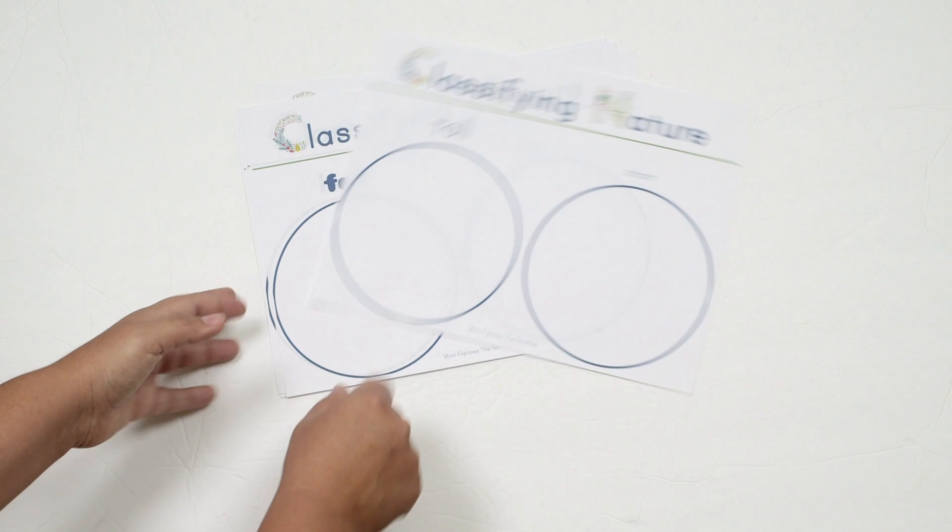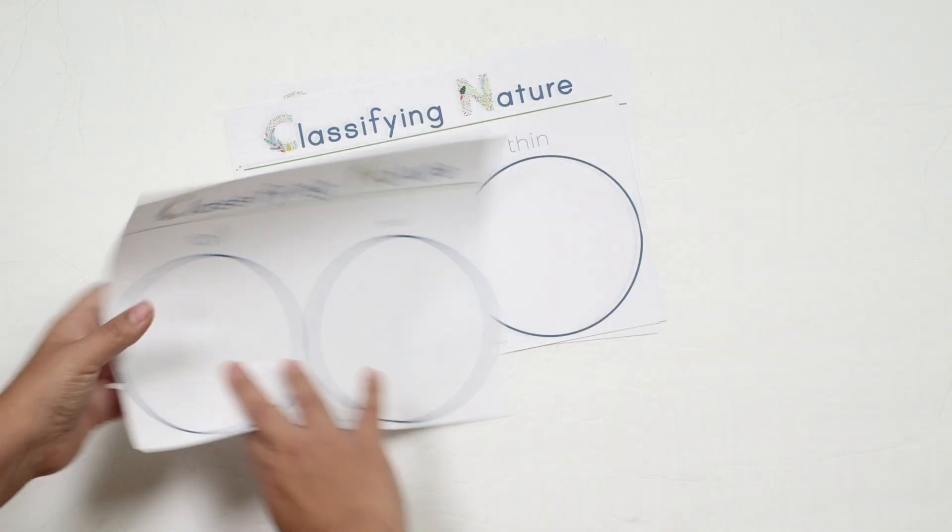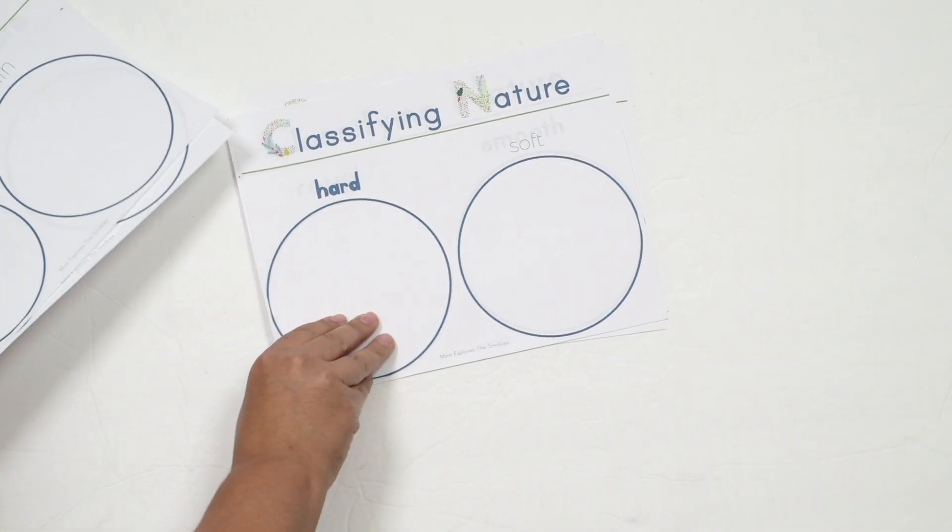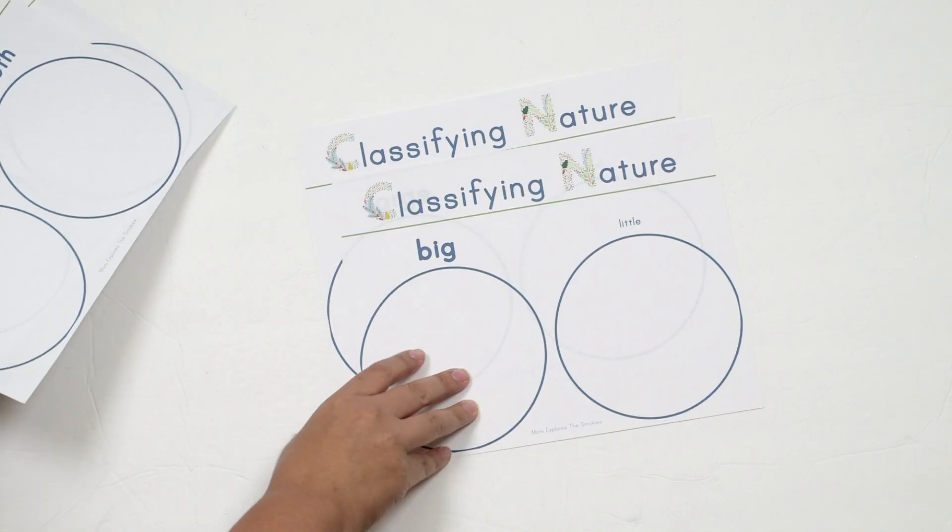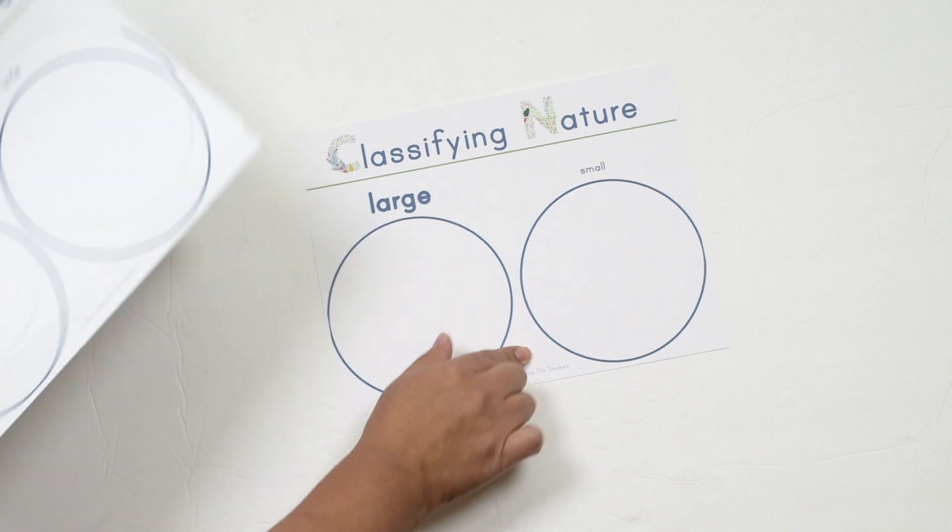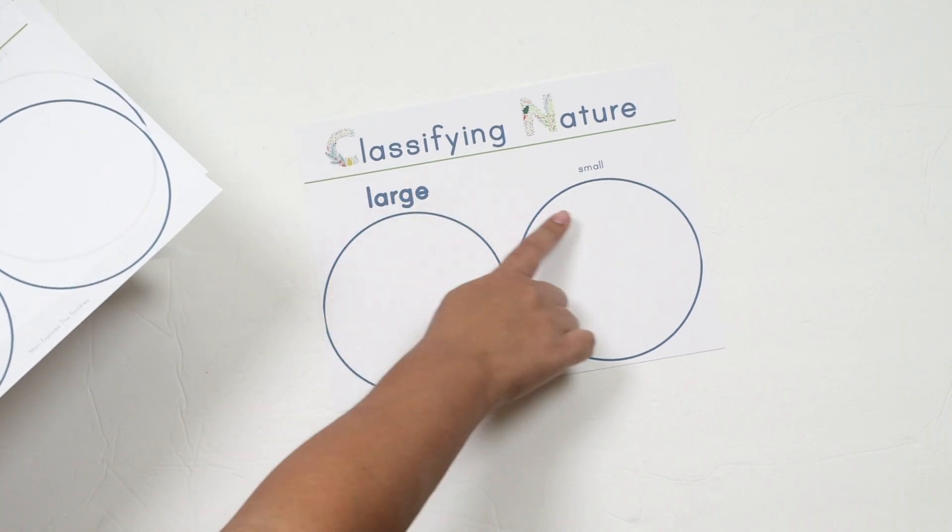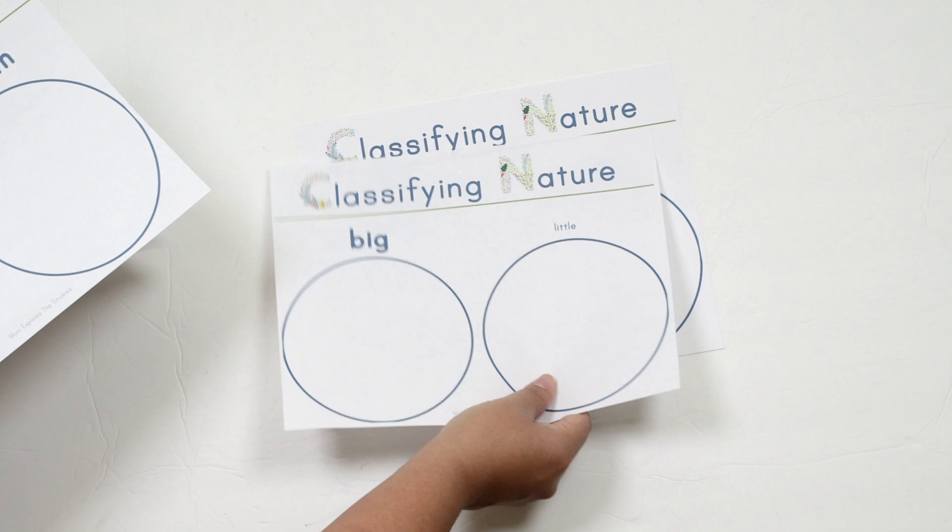This one says tall versus short. We have fat versus thin, hard versus soft, rough (that's supposed to be rough, it just didn't print) versus smooth, big and little, and we have large and small. I do like that they made the fonts large and small for an example here.